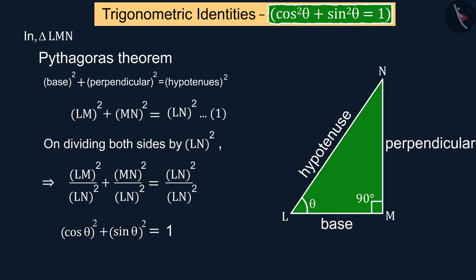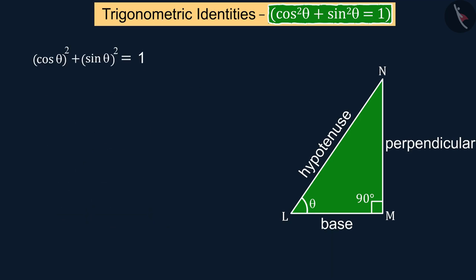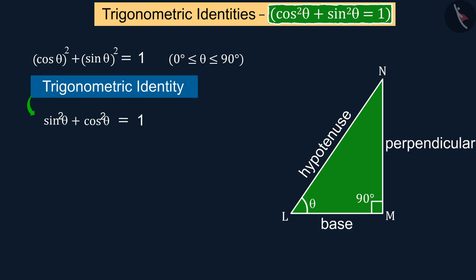So, we can say that the square of cos theta plus the square of sin theta is equal to 1, where the value of theta is greater than or equal to 0 degrees and less than or equal to 90 degrees, which is a Trigonometric Identity and it is represented by equation 2.